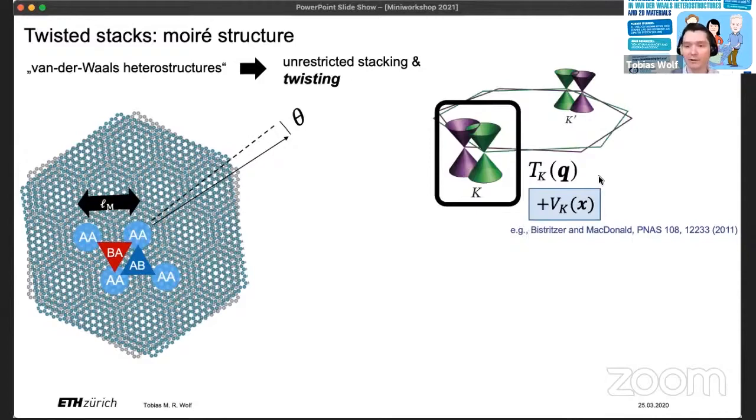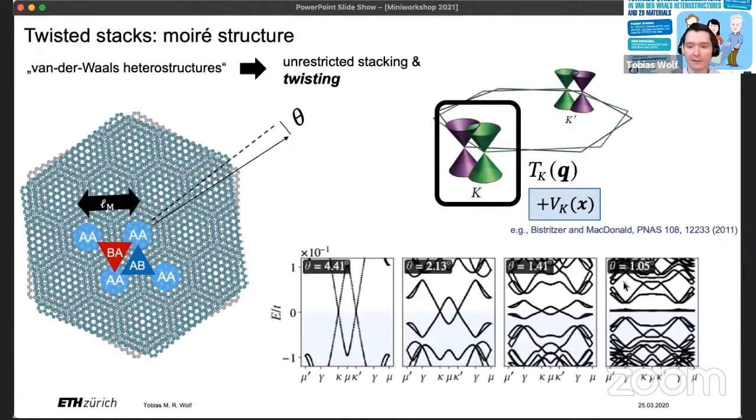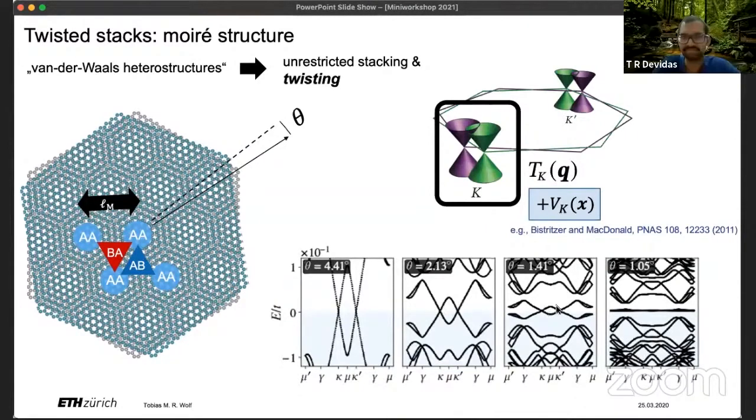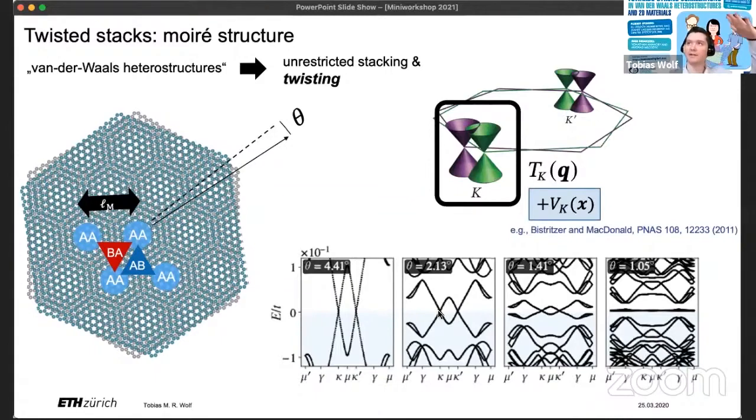So this is essentially what the Bistritzer-MacDonald model describes. And here I show you some examples for different twist angles. We see at somewhat larger angles of around four degrees the separate Dirac cones, the original displaced Dirac cones. And as we decrease the angle, the interlayer hybridization becomes more and more important and renormalizes the Dirac cones and eventually squeezes the bands flat as we go towards the magic angle. And this is then where there's a huge amount of activity to understand exotic correlations.